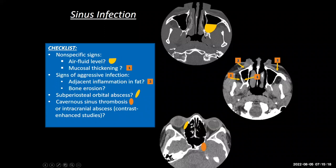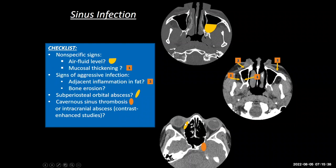Bone erosion — are there any signs of subtle bone erosion? That might not even be present, though. These infections are so aggressive and move so fast — they can extend through veins into the next space, and you might not even see bone erosion at the time of initial imaging. The sinuses are adjacent to the orbits, so you have to look for subperiosteal orbital abscesses, which occur within the potential space of the periosteum as an extension of the sinus infection into the true orbital space.